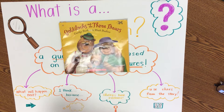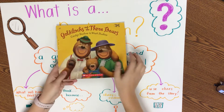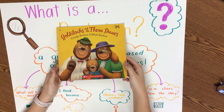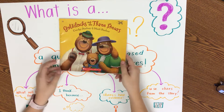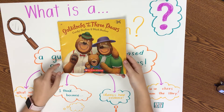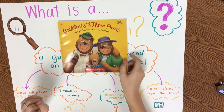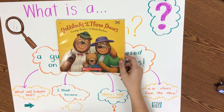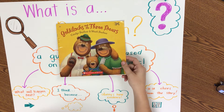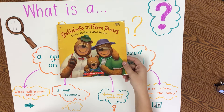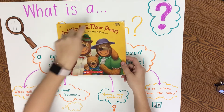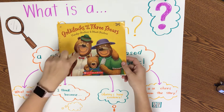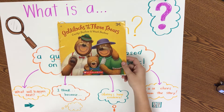I think this story is about three bears, because there are three bears on the cover of my book. Do you think that this story would be about elephants? No! Because the title of my book is Goldilocks and the Three Bears, and there are pictures of three bears on the cover of my book.